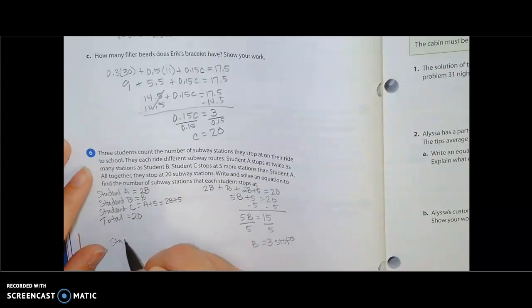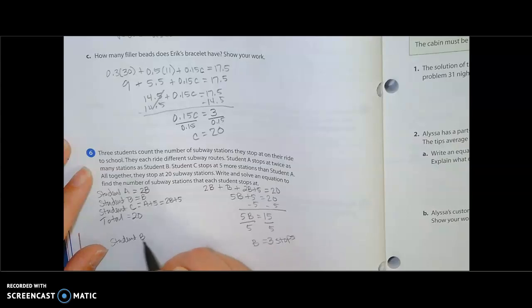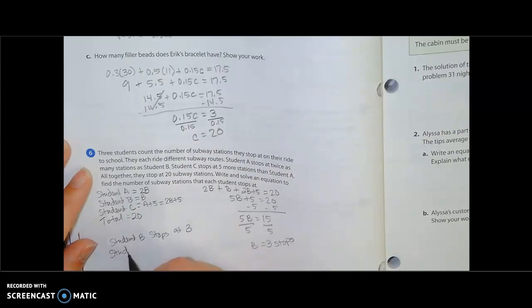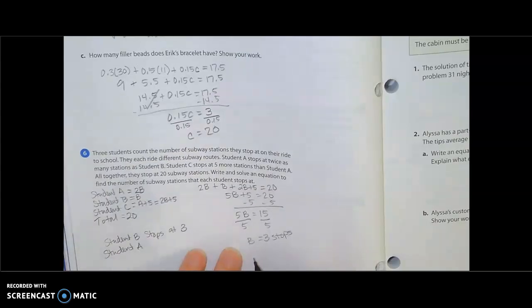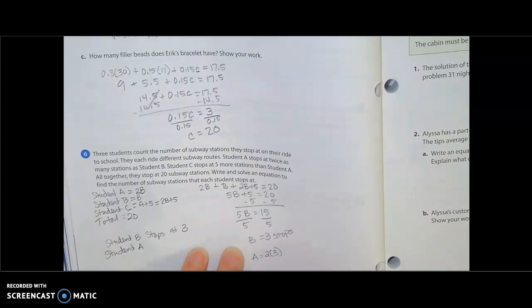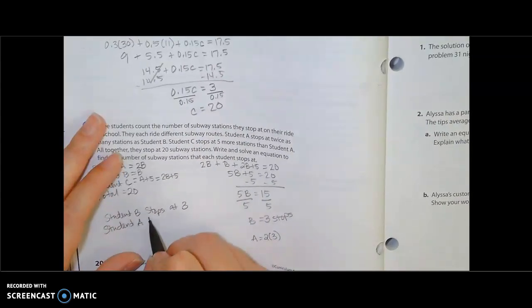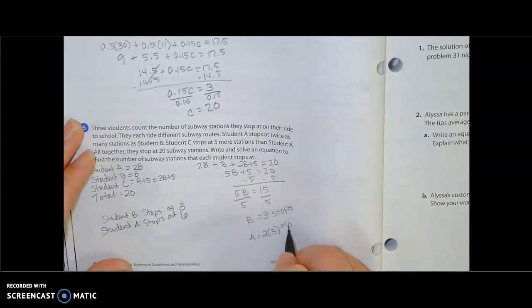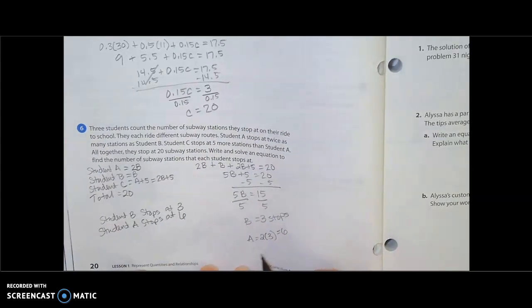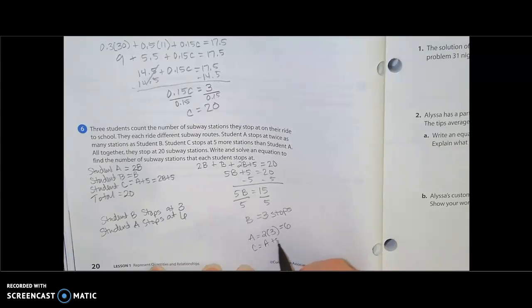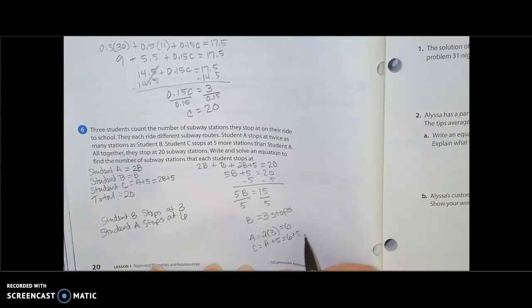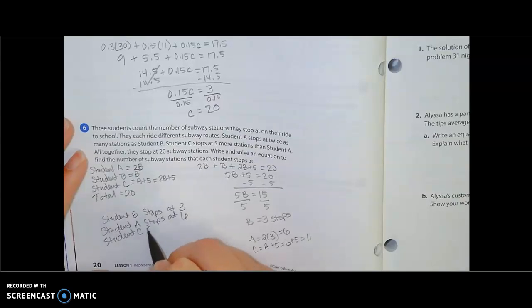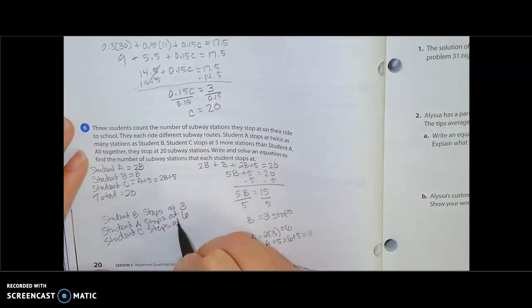Student A is going to be, so A equals 2 times B which is 3, so A stops at 6. And then we know that student C is A plus 5, so that's going to be 6 plus 5 which is 11. So student C stops at 11.